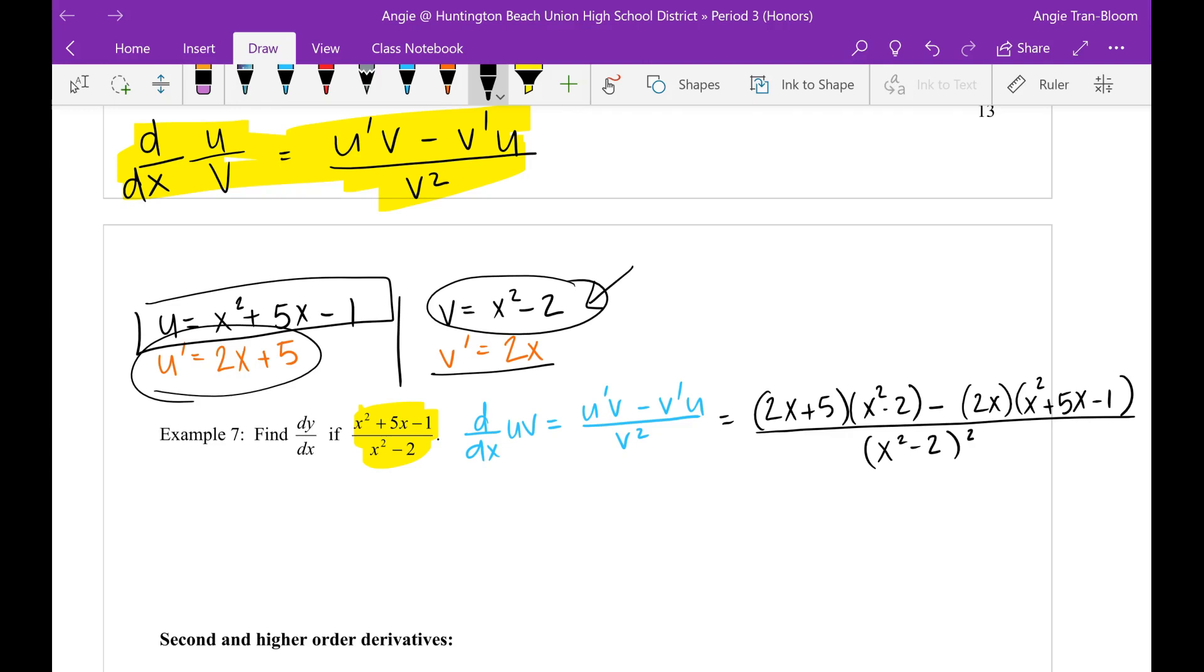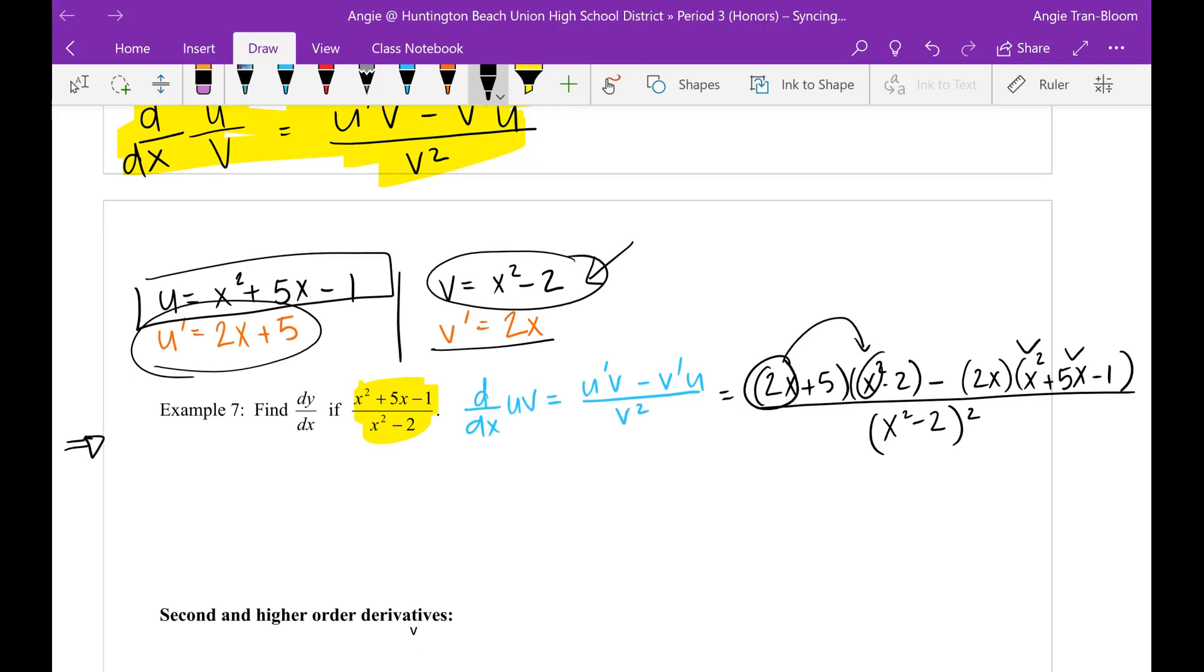So now I just have to slowly multiply this out. It looks like I need a lot of space. Let's take 2x times x squared. That will give me 2x to the third. Then 2x times minus 2 is negative 4x. Then we're going to take a 5. 5 times x squared is now going to be 5x squared. 5 times negative 2 is now minus 10. So that's my first set of multiplication. Subtract.